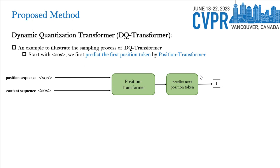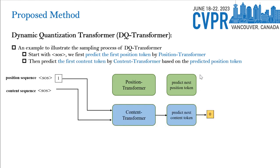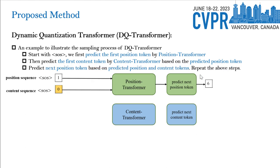We provide an example to illustrate the sampling process of DQTransformer. Starting with the SOS token, we first predict the first position token. Then we predict the first content token based on the predicted position token. This process is then repeated until all tokens are sampled.